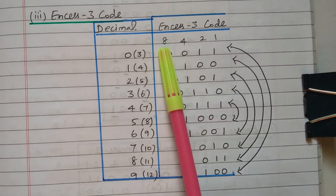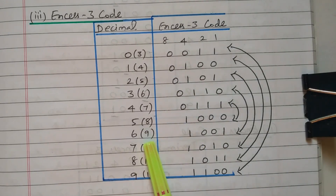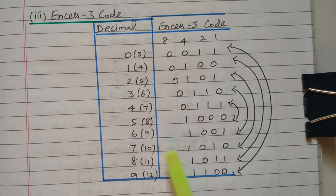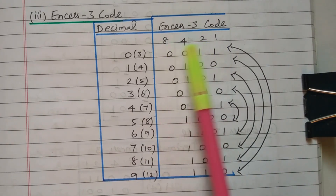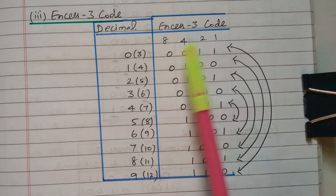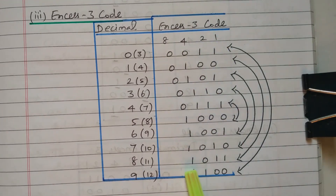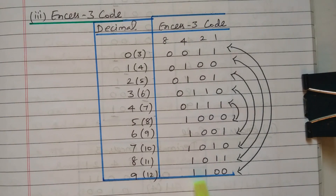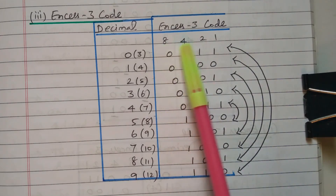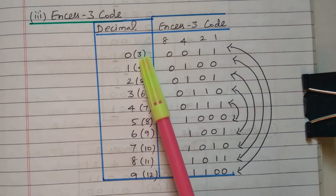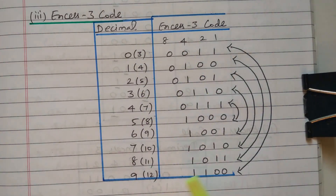For decimal 5 (XS3 value 8), the first position alone is 1 — we get 8: code is 1,0,0,0. For decimal 6 (XS3 value 9), first and last position: eight plus one is nine — code is 1,0,0,1. For decimal 7 (XS3 value 10), first and third positions: eight plus two is ten — code is 1,0,1,0. For decimal 8 (XS3 value 11), first, third, and fourth positions: eight plus two is ten, ten plus one is eleven — code is 1,0,1,1. For decimal 9 (XS3 value 12), first and second positions: eight plus four is twelve — code is 1,1,0,0. So we framed the XS3 code based on the 8,4,2,1 pattern with 3 added.